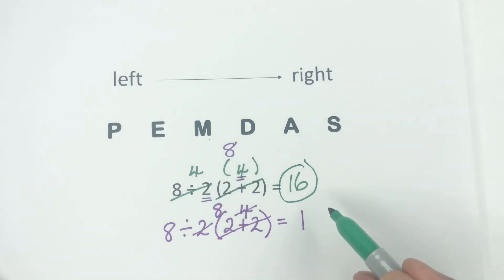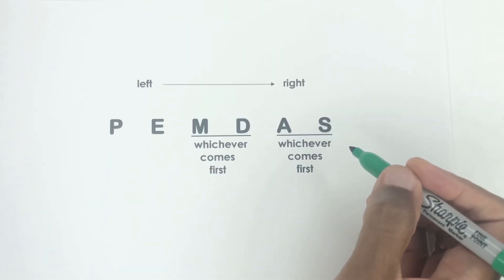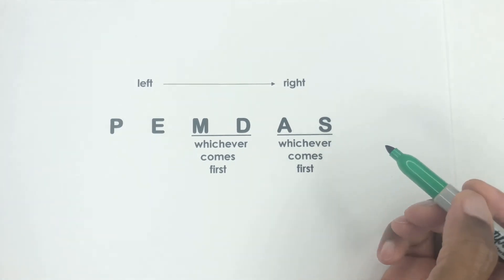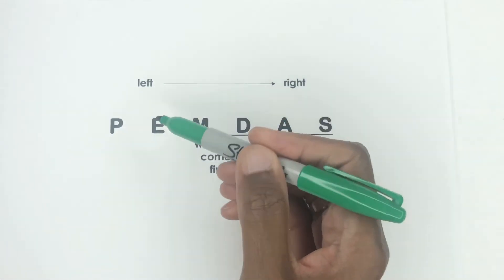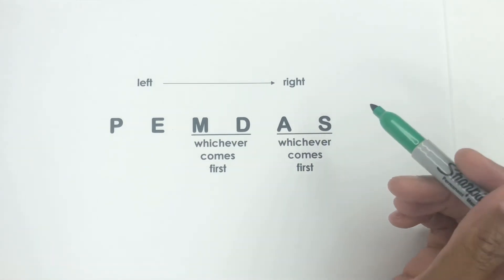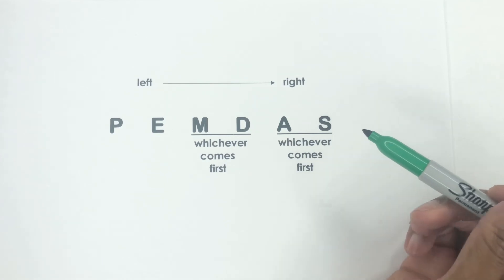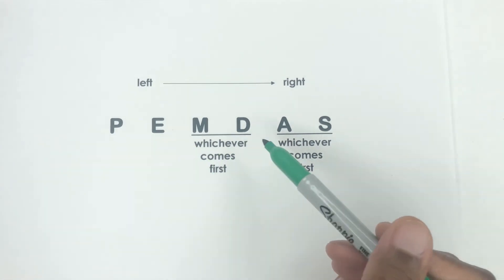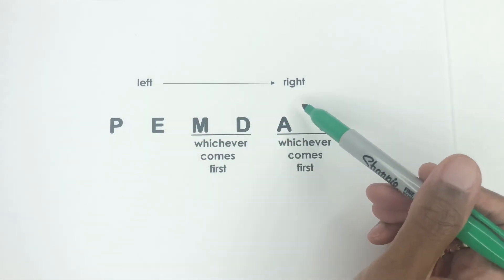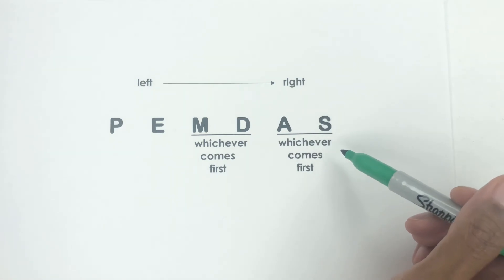So the answer is 16 because we are using the whichever comes first between these two specific operations. So I propose we get rid of the confusing acronym Please Excuse My Dear Aunt Sally and let's do something like this so it will make it easier for the students to remember. Put it up on the wall, put it around the classroom, so that they'll be able to see yes, you're spelling PEMDAS, but this is not a hard and fast rule—they're interchangeable, whichever one comes first.